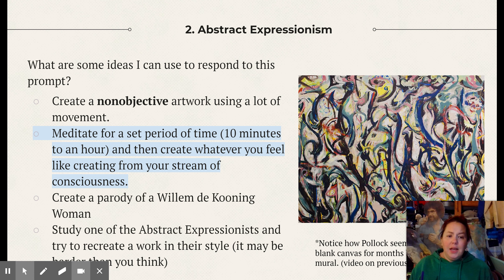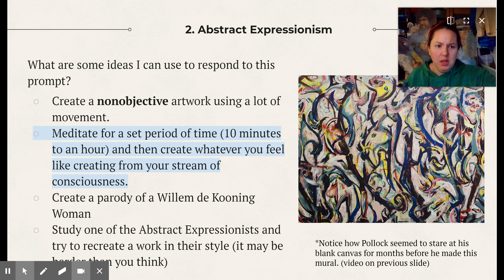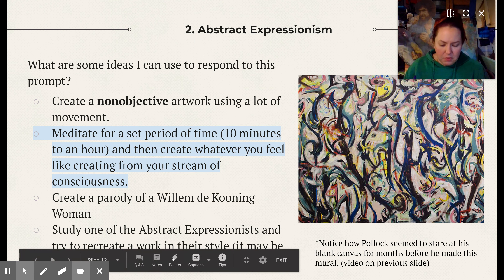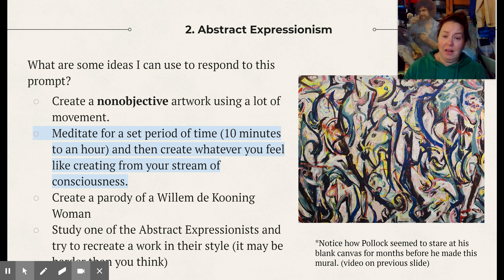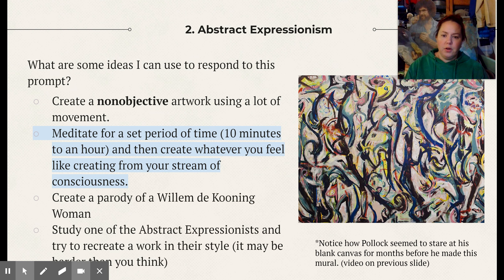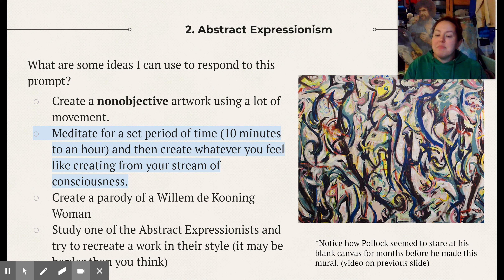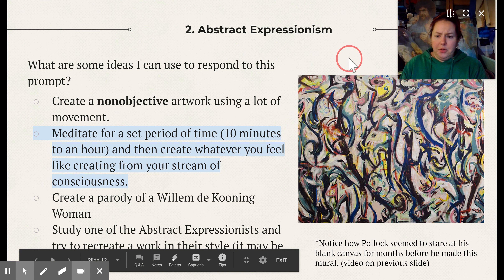You can create what's called non-objective artwork using those feelings. Non-objective artwork has no object in it — if you look at these paintings by Joan Mitchell, they are not pictures of anything; they're just wiggly, smudgy lines, colors and marks that she felt like making — that is the essence of Abstract Expressionism. Another option: if you watch the clip of Jackson Pollock painting, you'll notice that he didn't paint anything for months and seemed like he was meditating on that blank canvas. Maybe set a time for yourself to zone out and meditate for 10 minutes to an hour, and then after you pull yourself out of that meditation, create whatever you feel like creating.